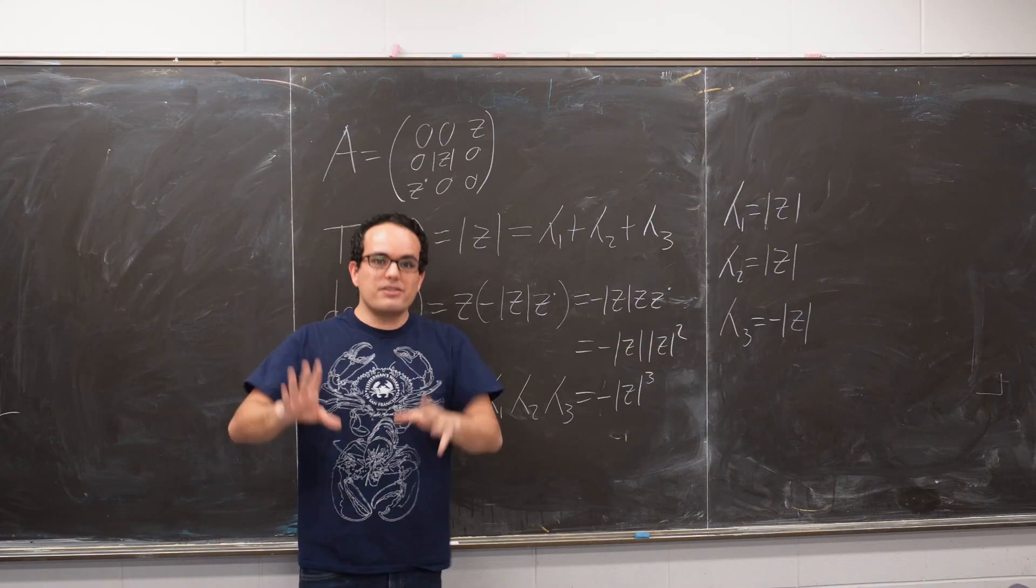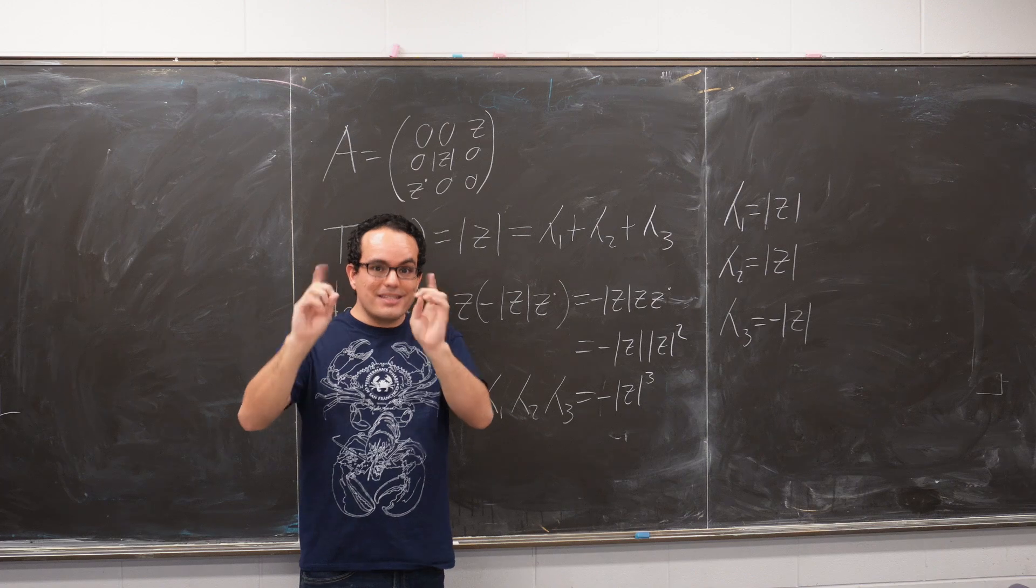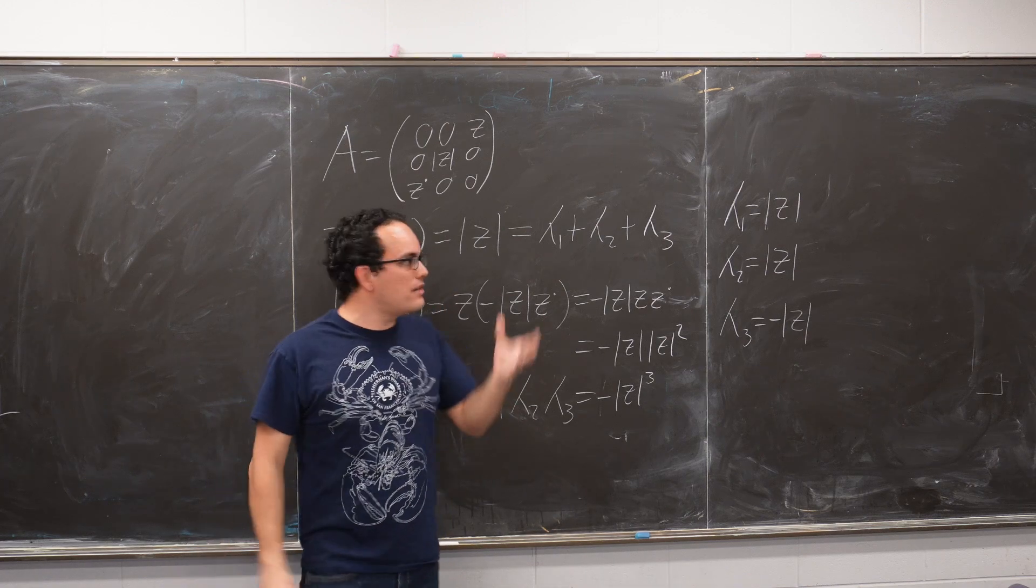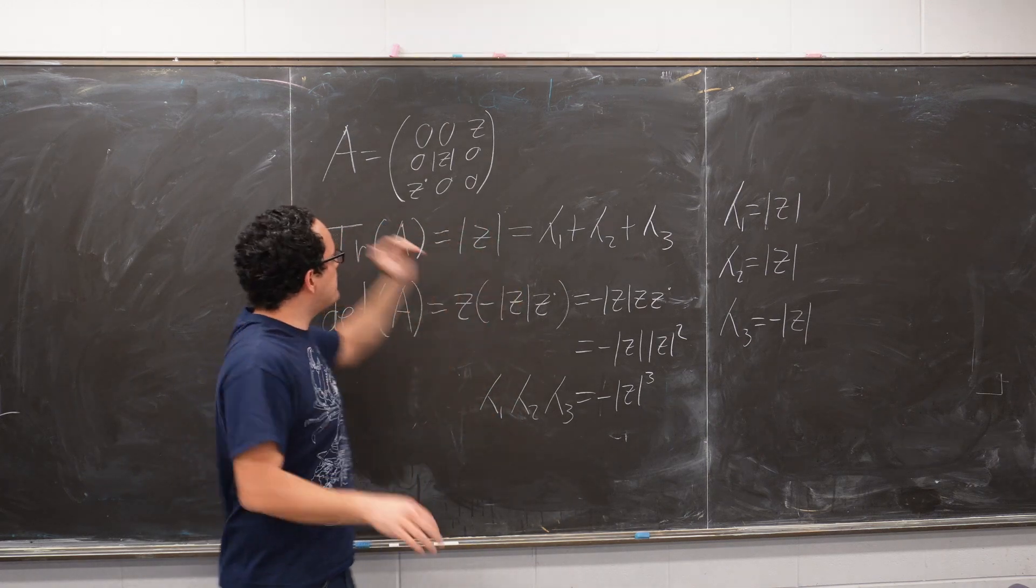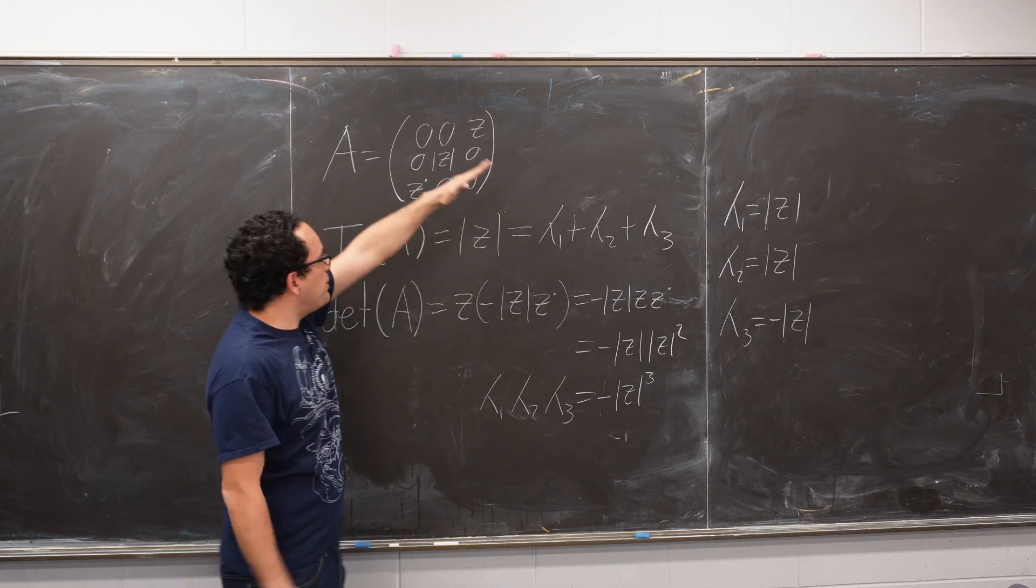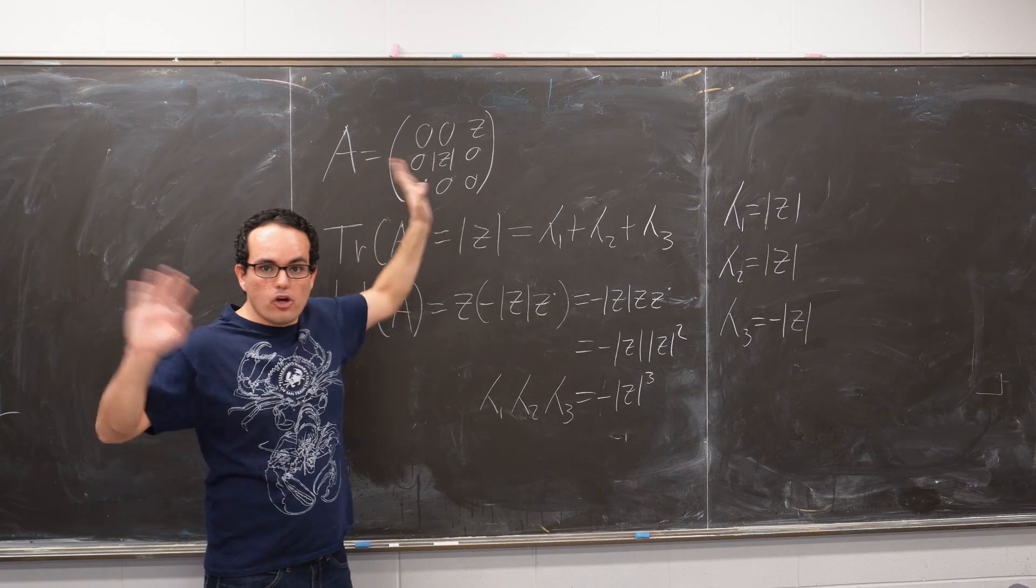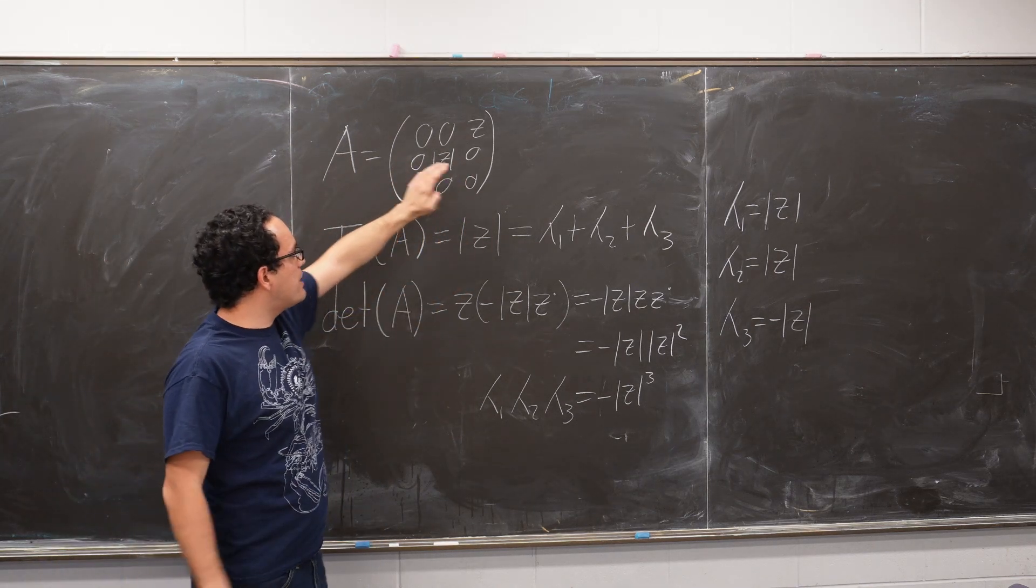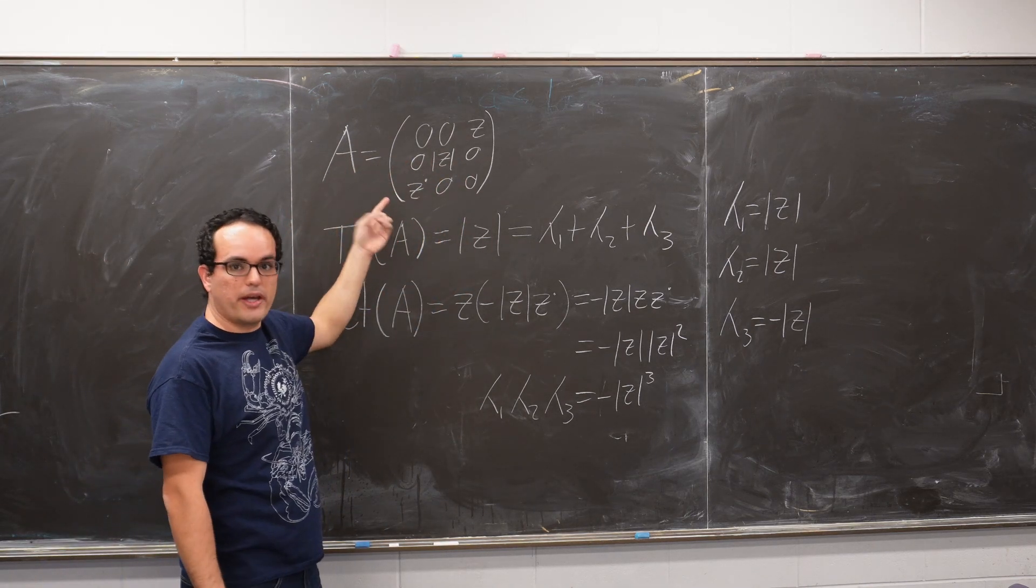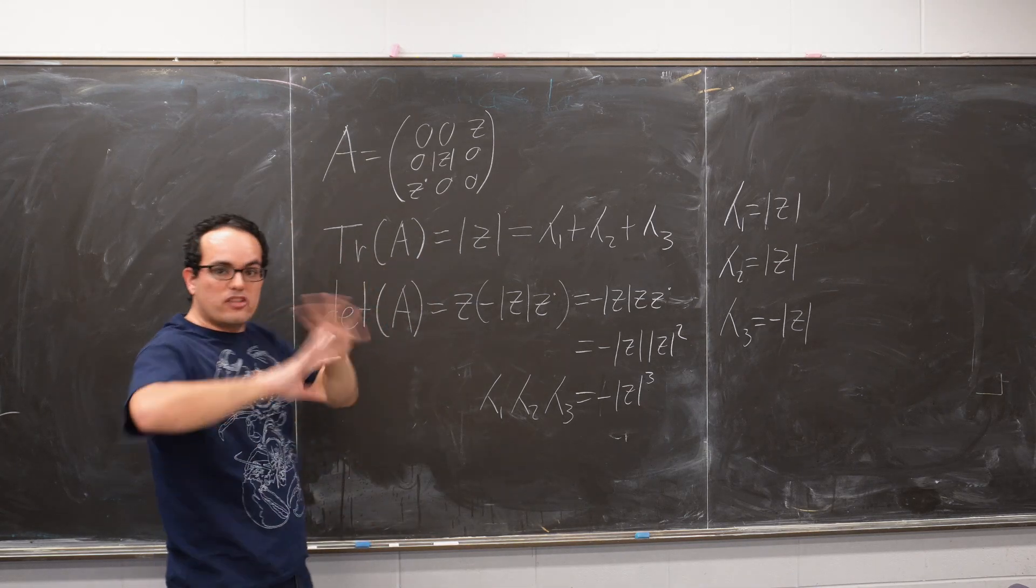At the last moment, I decided to include a worked example. And this is actually how I realized that you could do this. So we have a matrix A, which is diagonal, put in the wrong way. And we have Z, which is some complex number. We have the magnitude of Z, and then we have the complex conjugate of Z. And so let's use my trick.